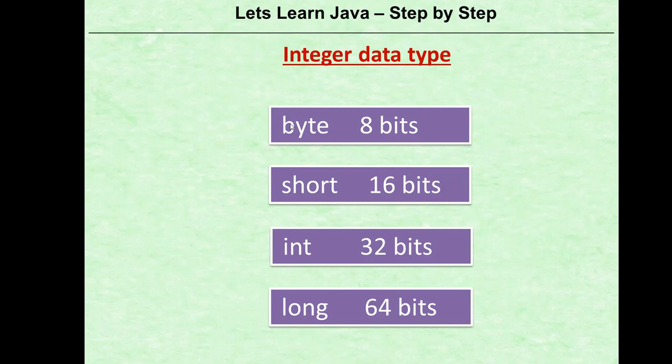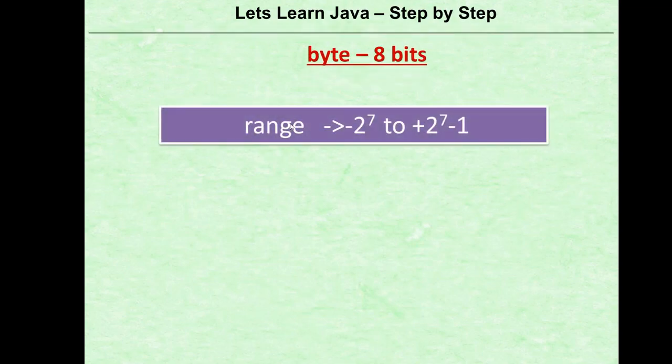So there are four integer data types depending on size. Let's look at byte specifically. Byte is 8 bits, and the range is minus 2 to the power 7 to plus 2 to the power 7 minus 1. Since byte is a signed variable, the range spans from the negative side to the positive side — every variable in Java is signed.